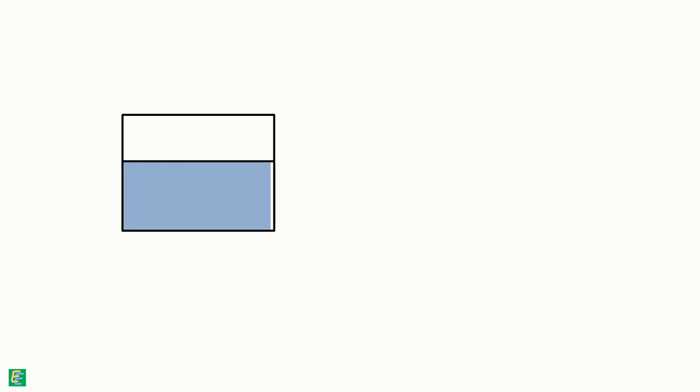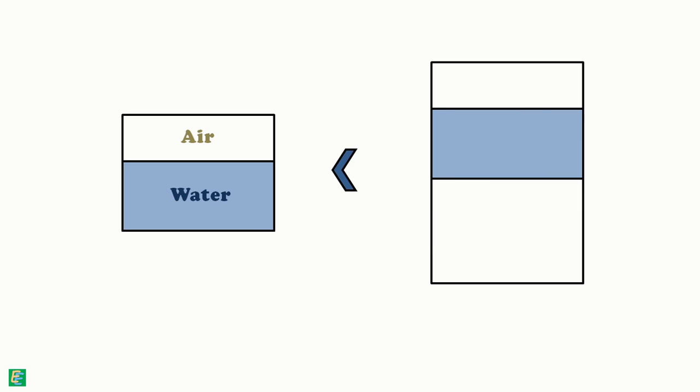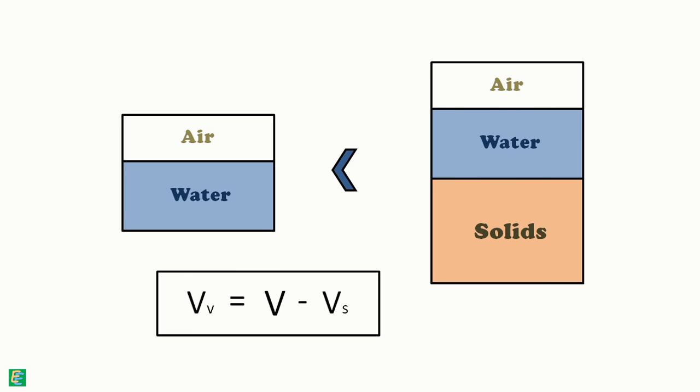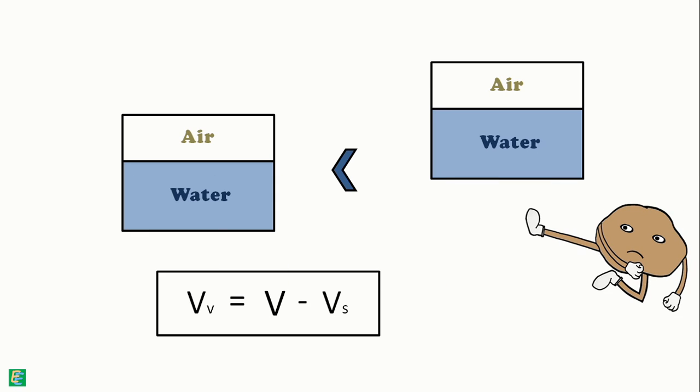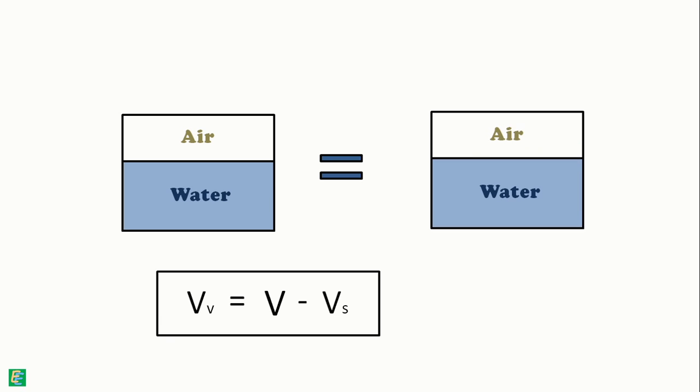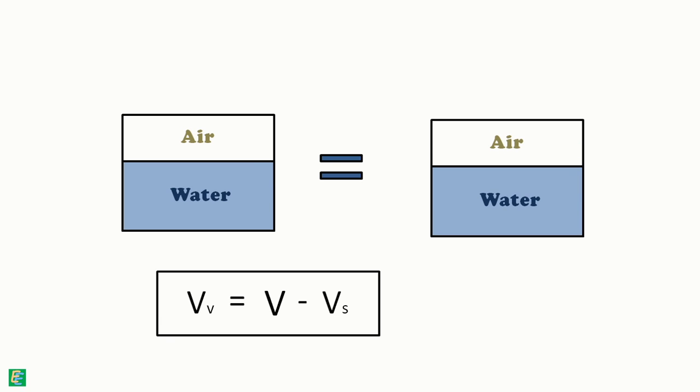Volume of voids in any sample will never be greater than total volume of that sample because volume of voids is equal to the total volume of soil sample minus volume of solids present in the sample. So, even when volume of solids is equal to zero, volume of voids will be equal to the total volume but will never be greater than it.